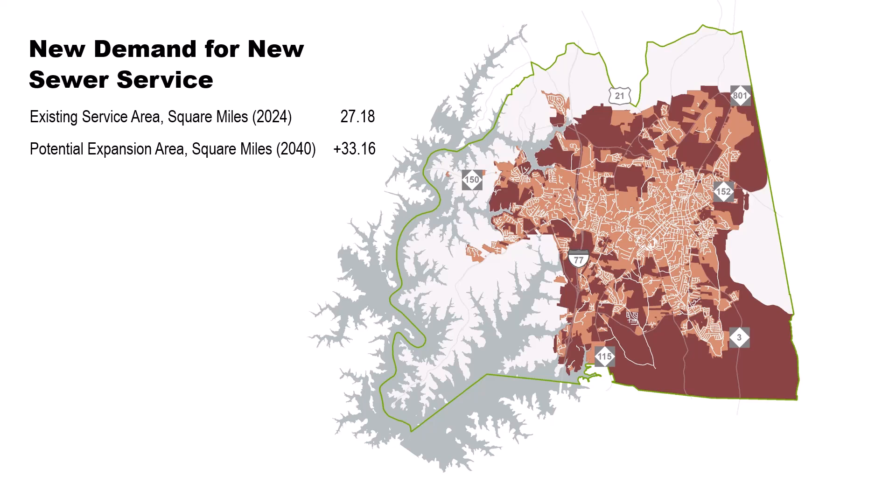An enormous increase to the existing sewer service area — generally the town limits — would be needed in all directions, but especially south and east, to serve the intended growth area for Scenario C. The footprint of the potential service area would more than double. However, the timing and location of system expansion would be influenced by the distribution of future growth and development depicted on the growth allocation maps presented earlier.